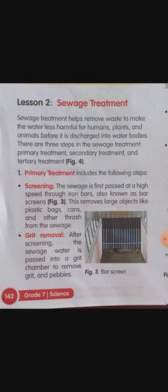Lighter impurities like oil and grease float to the surface of the water as scum. The scum is removed with a skimmer. The water that leaves the sedimentation tank is called clarified water. Heavy waste settles as sludge, floating impurities are skimmed off, and the remaining water is the clarified water.